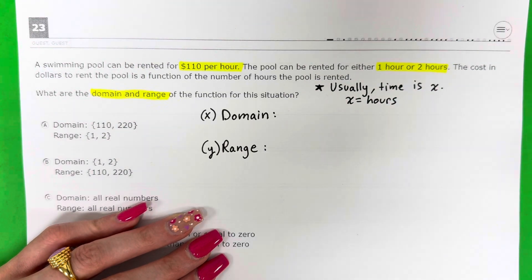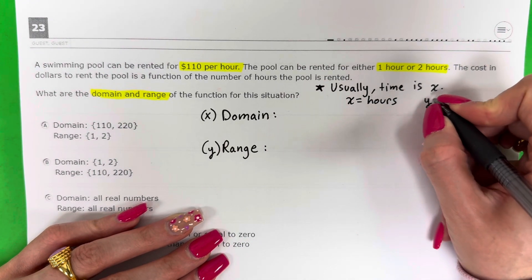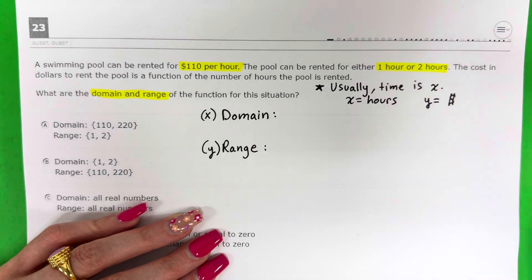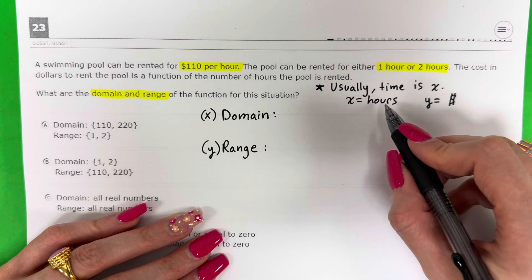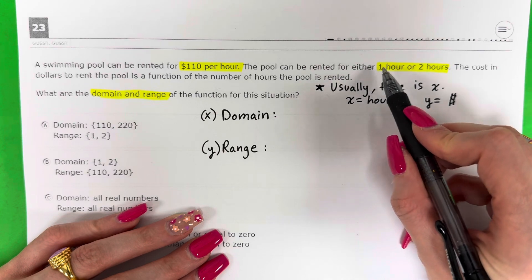So if hours is x, then dollars has to be my y. My hours are either 1 or 2.